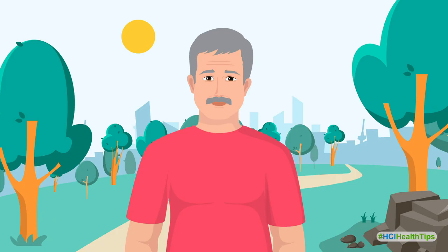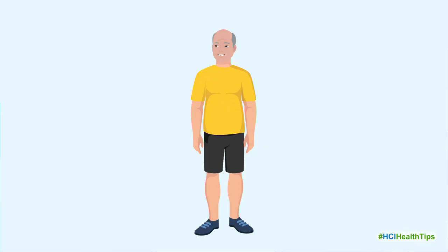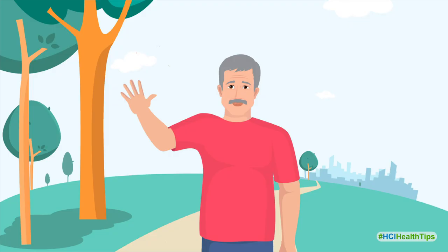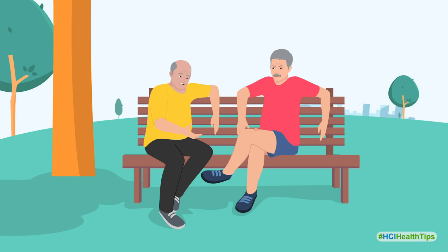One morning while jogging in the park, Danny meets his friend Rosario. Mr. Rosario is a 55-year-old lawyer and also a diabetic patient for 18 years. Danny calls Rosario to come and sit on a nearby bench in the park. While talking, Rosario suddenly notices a small lump on Danny's thigh.